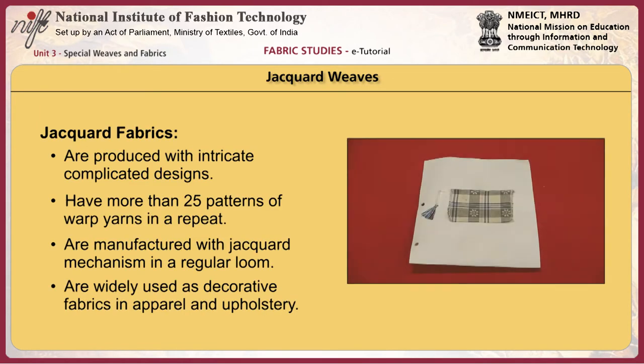Jacquard fabrics are produced with intricate, complicated designs. They have more than 25 patterns of warp yarns in a repeat. They are manufactured with jacquard mechanism in a regular loom. They are widely used as decorative fabrics in both apparel and upholstery.